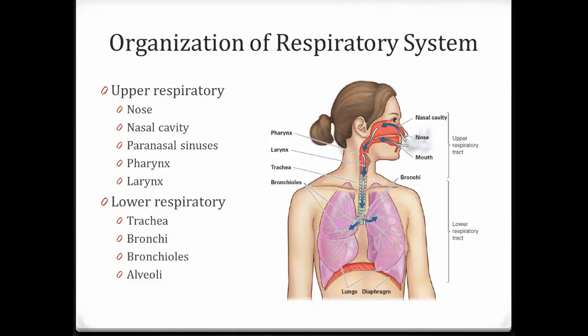When you hear someone has an upper respiratory infection, it's going to involve one of those structures at the top. A lower respiratory infection involves the structures down below. Depending on the source, sometimes the larynx is included in the lower respiratory, but we're going to go with what your textbook says.